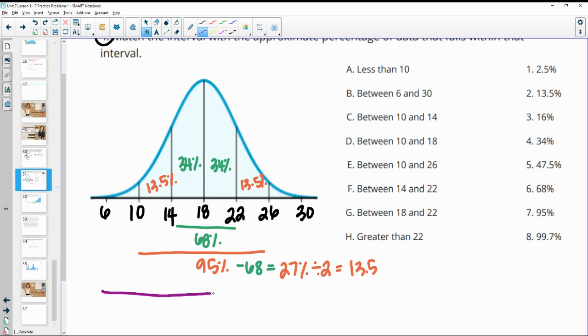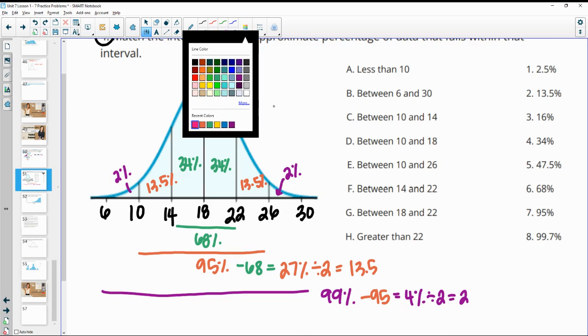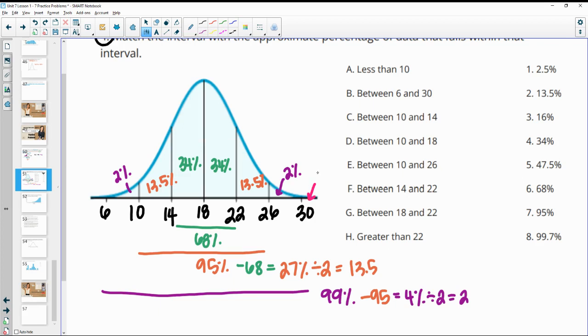Then within three standard deviations of the mean is 99% of your data. So if we subtract off the 95% that's already within two, if we do the 99 minus the 95, that gives us 4% for these two little pieces here. So then we'll divide that by two and we get 2% in each of these. And then we have 1% left for the other parts. So this would be 0.5% and this would be 0.5%.